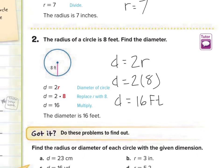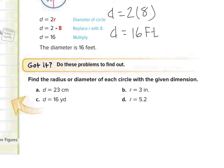Now you try. Find the radius or diameter of each circle with the given dimension. If they tell you the diameter, show how you would find the radius. If they tell you the radius, show how you would find the diameter. Stop the video at this point and do problems A, B, C, and D, then we'll go over those together.